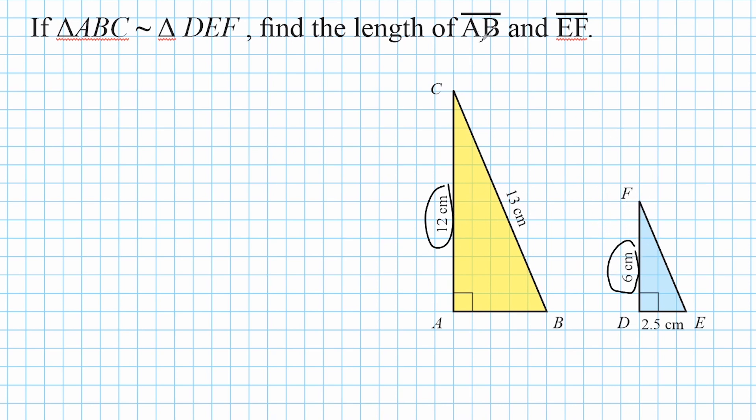So let's start with line segment AB. Line segment AB is right here, or the base of this yellow triangle. Well, because the height of this yellow triangle is double the height of this blue triangle, then the same thing would be true of this triangle's base. It will be double the base of this blue triangle, which is 2.5 centimeters. So if we double 2.5, we would get 5 centimeters. So we would say the length of line segment AB is equal to 5 centimeters.